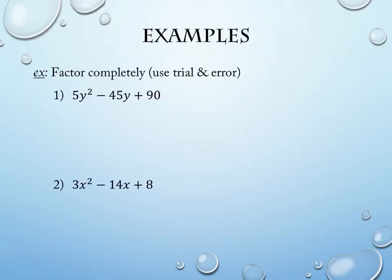The first ones we're going to look at, we're going to do with trial and error. The first thing we should always do is look and see if there's a factor in common to everything. There's not a y in every term, so no variables. But I have the numbers 5, negative 45, and 90. Are they all divisible by anything? 5. So we're going to pull out any common factors.